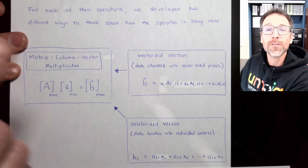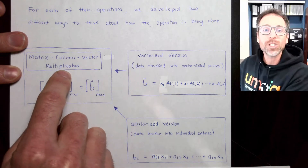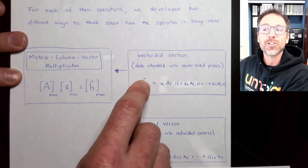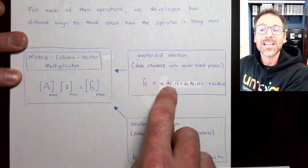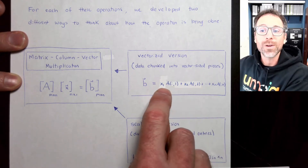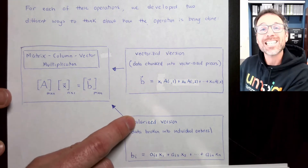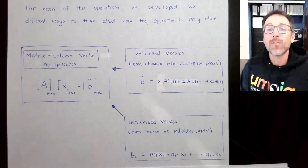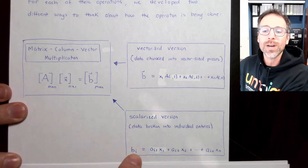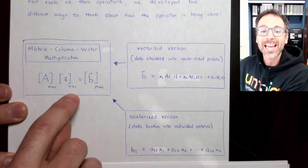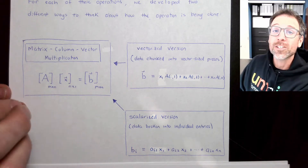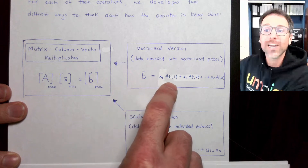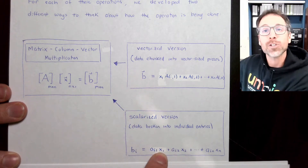For each of those operations, we developed two different approaches to constructing the output. For matrix column vector multiplication, we had a vectorized version, where we chunk the output vector B as a linear combination of the columns of A with scalar multiples defined by the individual entries of x. We also had a scalarized version, where each entry of the output is a dot product between the i-th row of A and the vector x. Notice in the vectorized version we're looking at the columns of A, but in the scalarized version we're looking at the rows of A.